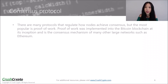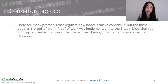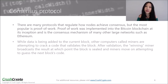There are many protocols that regulate how nodes achieve consensus, but the most popular one is proof-of-work. Proof-of-work was implemented into the Bitcoin blockchain at its inception and is a consensus mechanism of many other large networks, including Ethereum. While data is being added to the current block, other computers, called miners, are attempting to crack a code that validates the block.